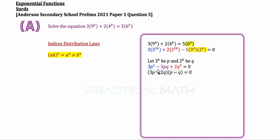As you can see, this gives us 3p squared minus 5p cubed plus 2q squared equals 0. Once we change to p's and q's, we can tell that we are able to do a cross factorization, giving us the first pair of parentheses: 3p minus 2q, multiplied by p minus q.